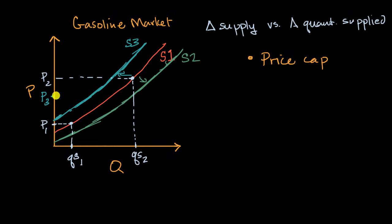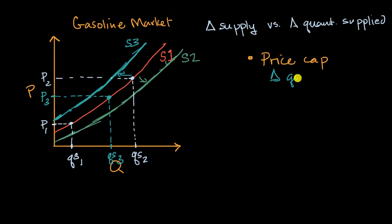This is a classic case of a shift along a supply curve. The price was there before, now it shifts, and so we're going to have a different quantity supplied — quantity supplied three. This is a change in quantity supplied. In this case, the quantity supplied would go down, assuming that the price cap is below what the price was before the price cap.